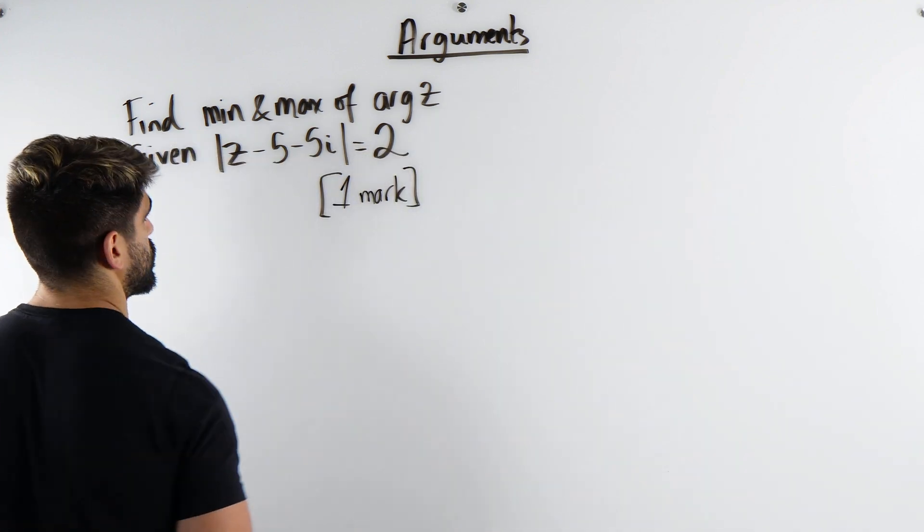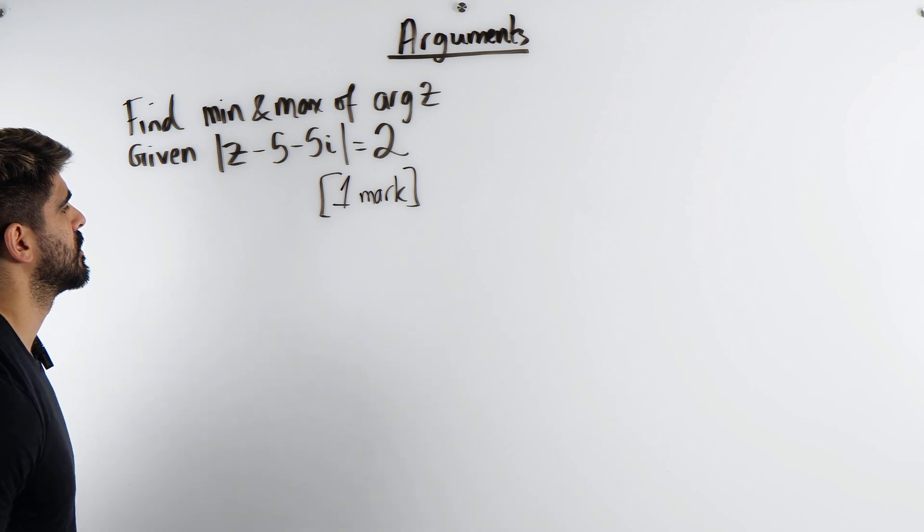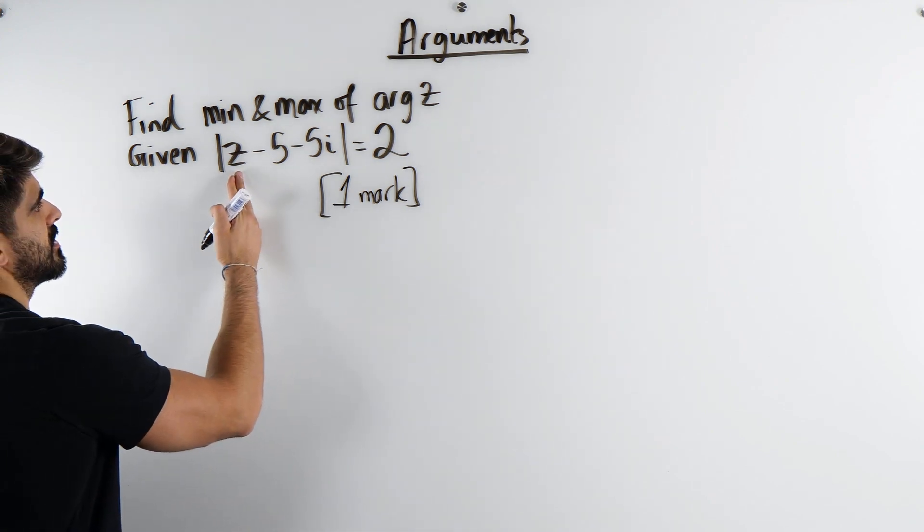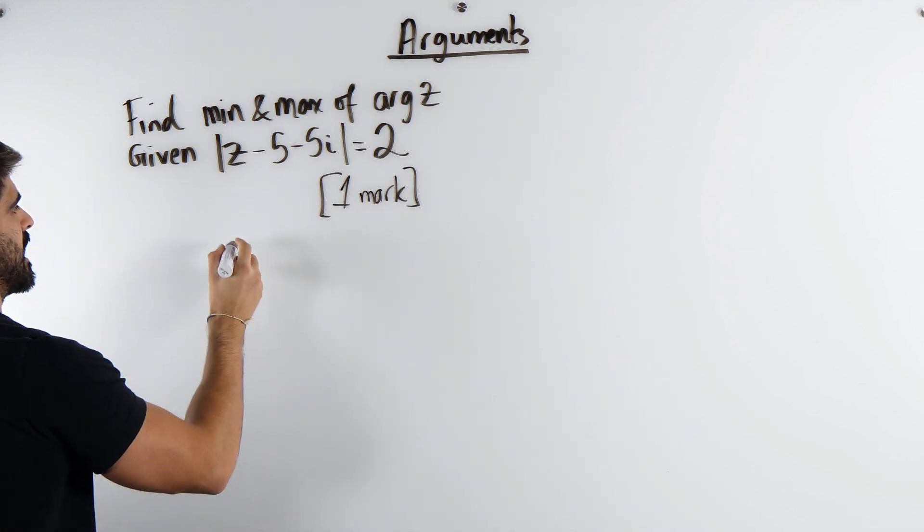Alright with all these questions we should always be focusing on a diagram. So if we just rewrite it first, we should always be able to spot this as being a circle, that's just elementary stuff.